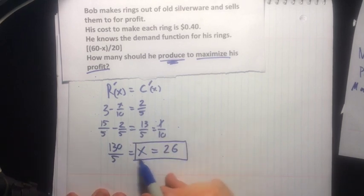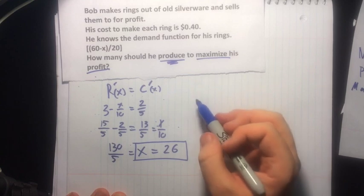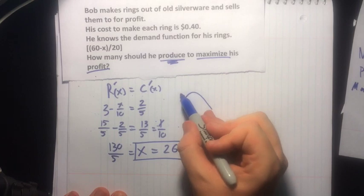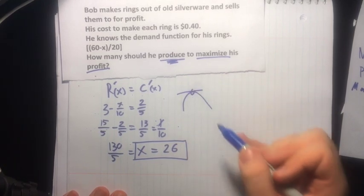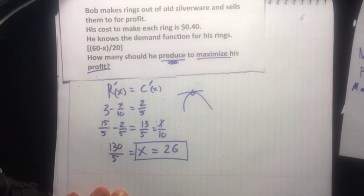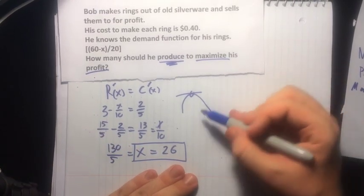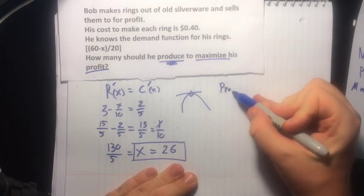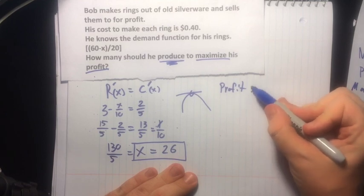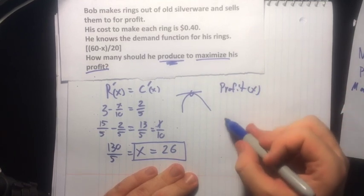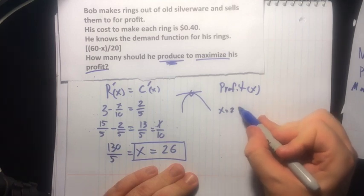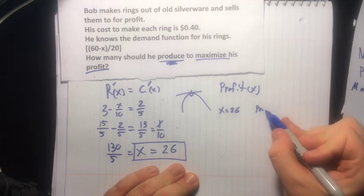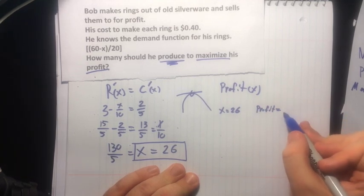So we're thinking when marginal profit equals zero, that means the slope of our profit graph is going to equal zero. And that's when you're here at the top. That's when you've reached your maximum. Real quickly, we'll just look back and prove that. So we'll look back at our profit function P(x). And we'll do when x equals 26, profit equals what? And we'll figure that out.